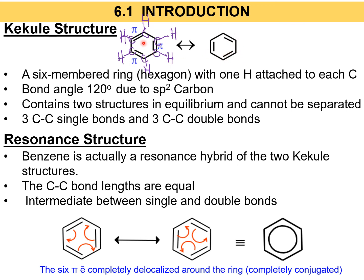The reason benzene is in equilibrium is because the double bonds can delocalize and shift their positions. The Kekulé structure is a hexagon with 3 carbon-carbon single bonds and 3 carbon-carbon double bonds alternating. This is actually the resonance hybrid of two Kekulé structures. When forming the resonance structure, all carbon-carbon bond lengths become equal, representing an intermediate between single and double bonds.